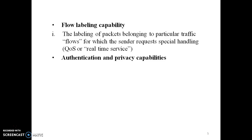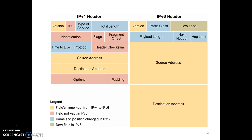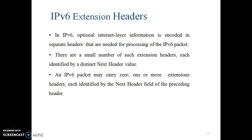These are the header formats of IPv4 and IPv6. We can see that IPv6 has a very small number of fields compared to IPv4, so processing at routers will take less time.